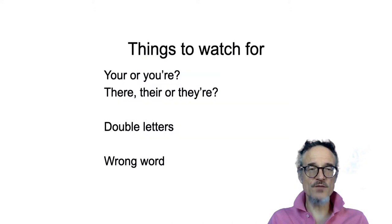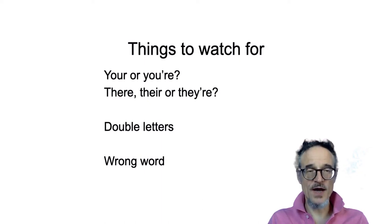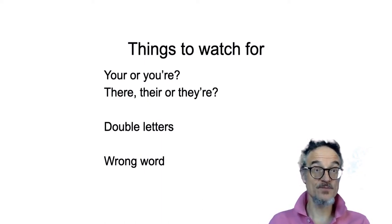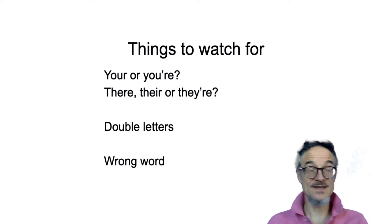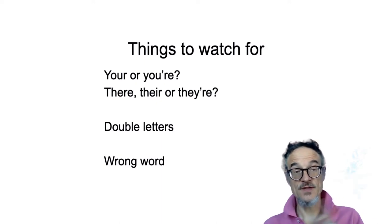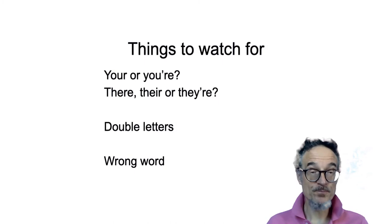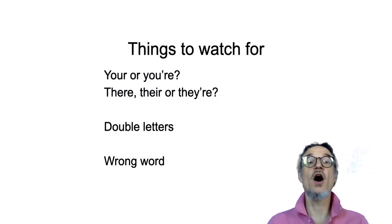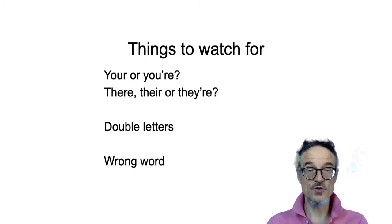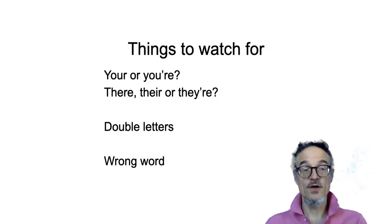Watch out for 'your' — is it 'your' or 'you're' as in 'you are'? And there could be three different 'there's: 'there' as in 'not here', 'their' as in belonging to them, or 'they're' as in 'they are'. Those are all there, their, they're.